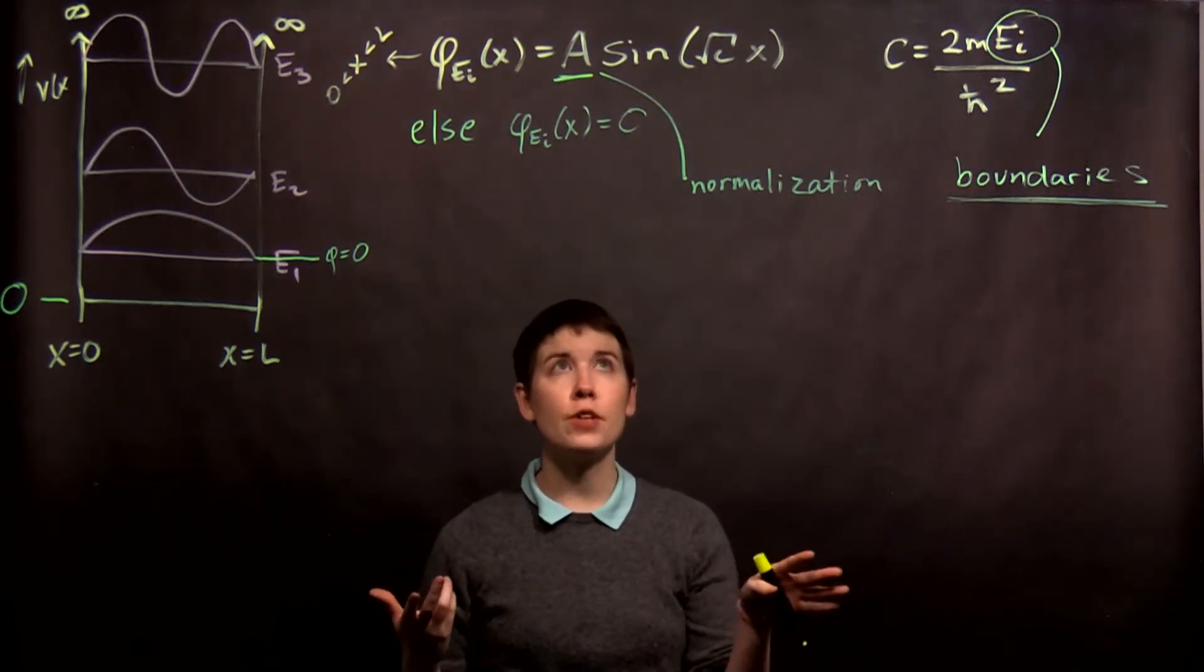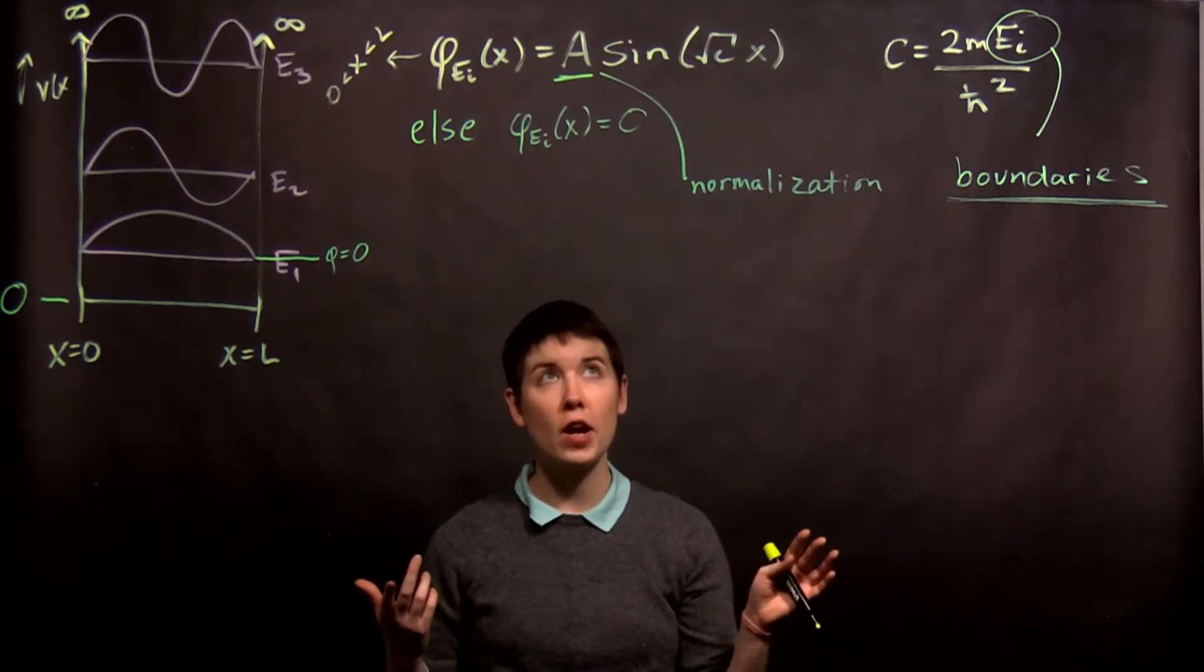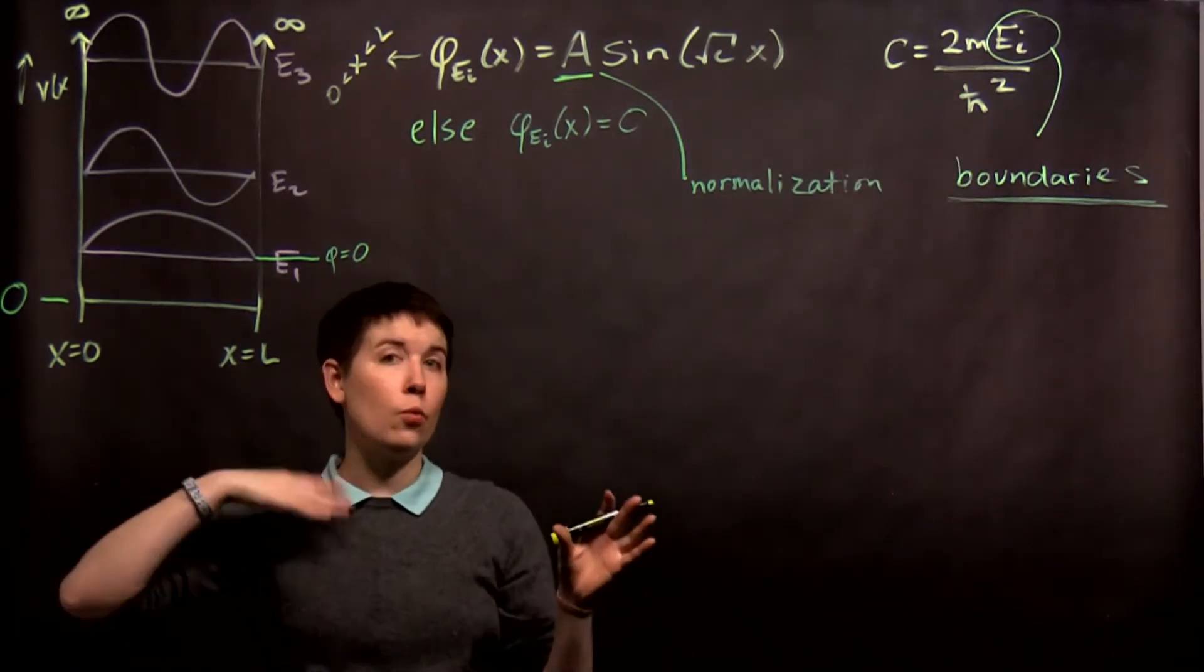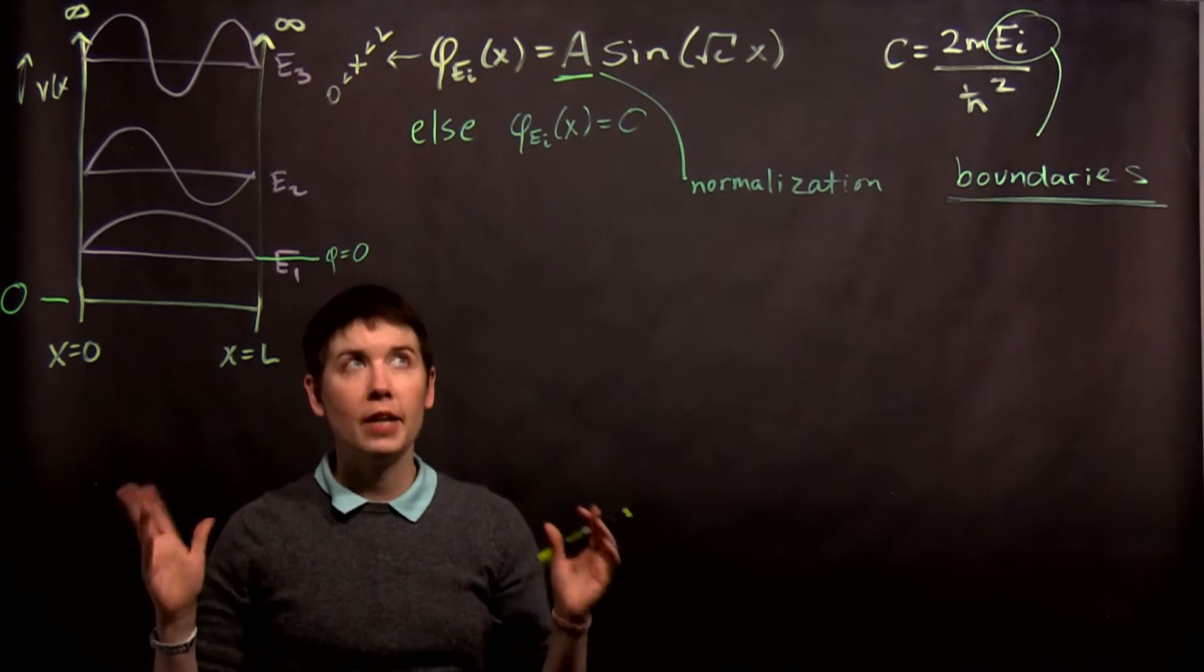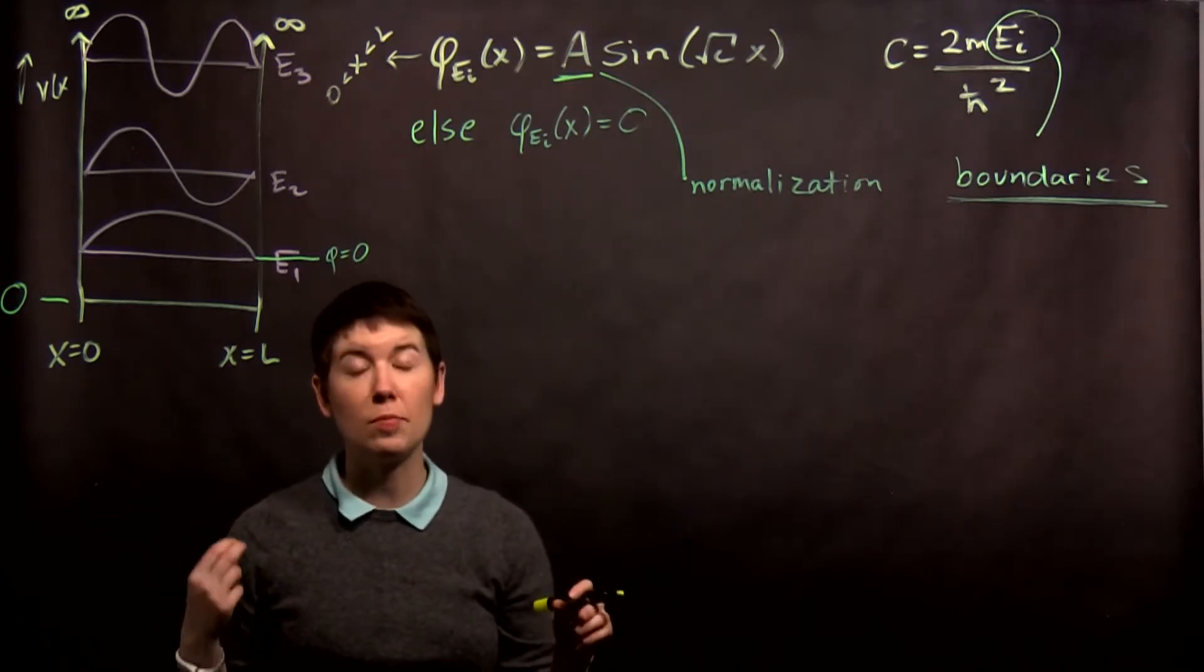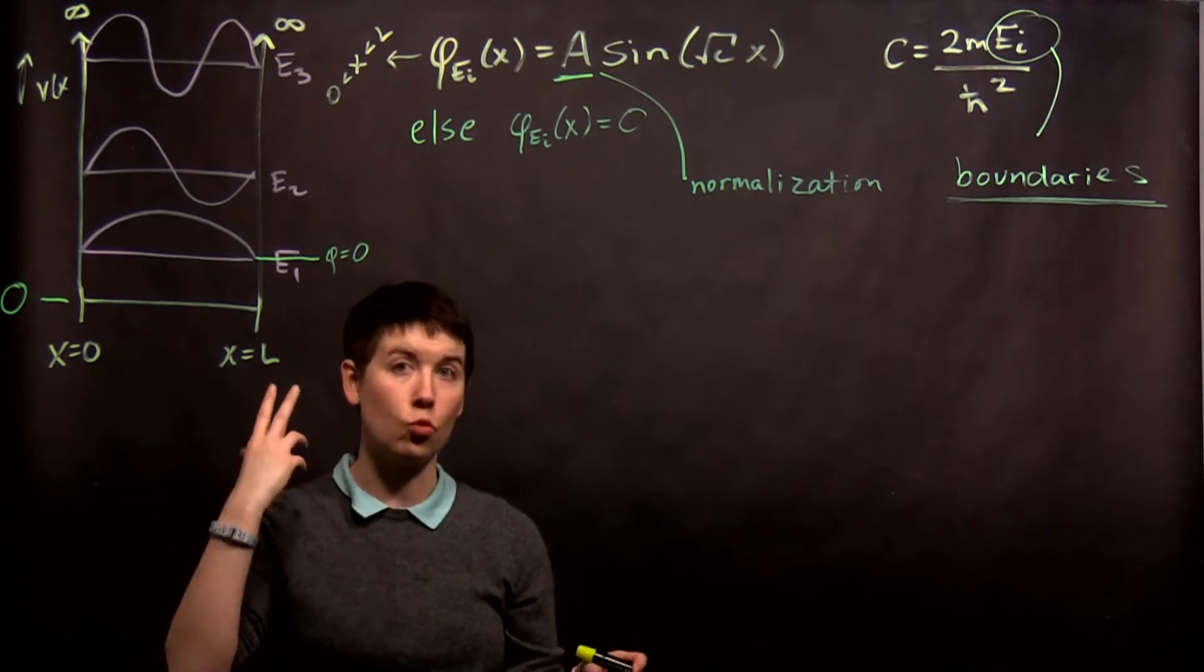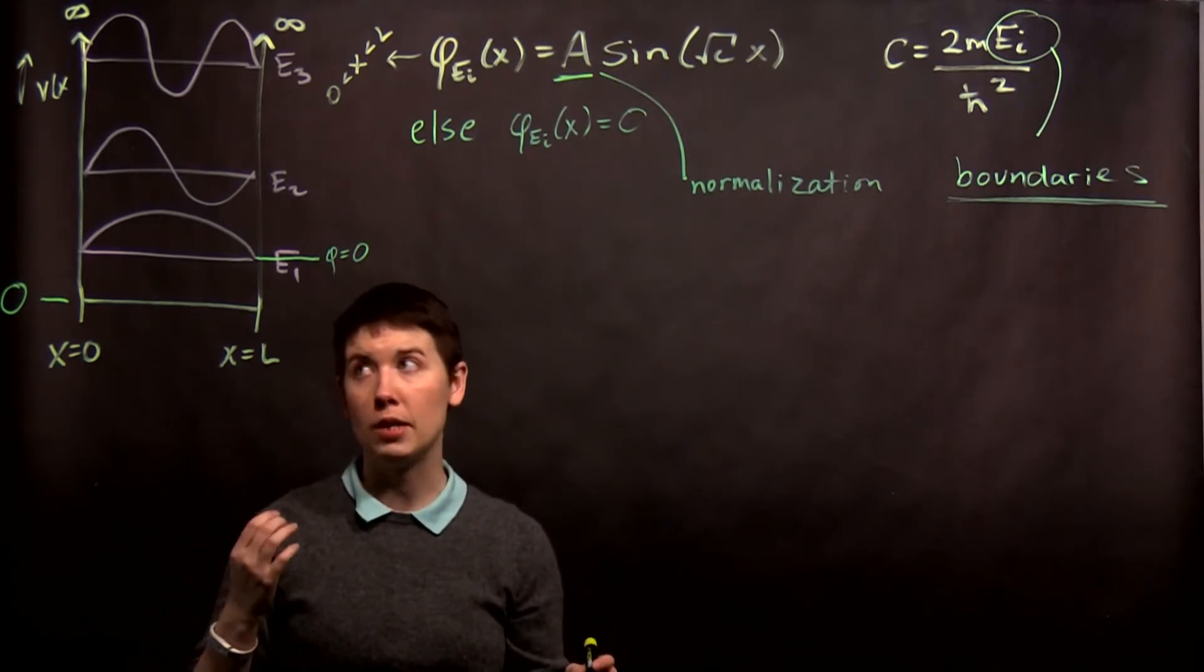I'm going to go through the idea of the boundary conditions now to actually constrain what this term is. A separate video went through the idea of normalization. Now, boundary conditions are going to be really critical. We're not always going to have them, but the infinite well is a great example where we can understand what's happening.